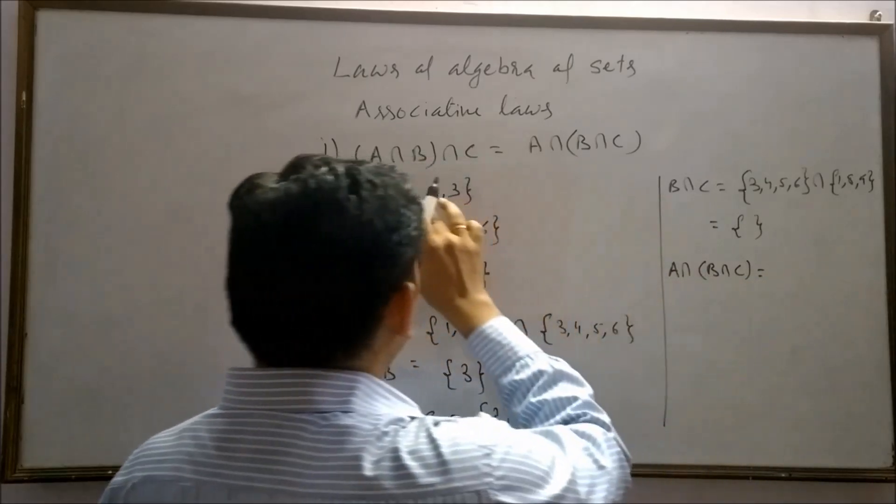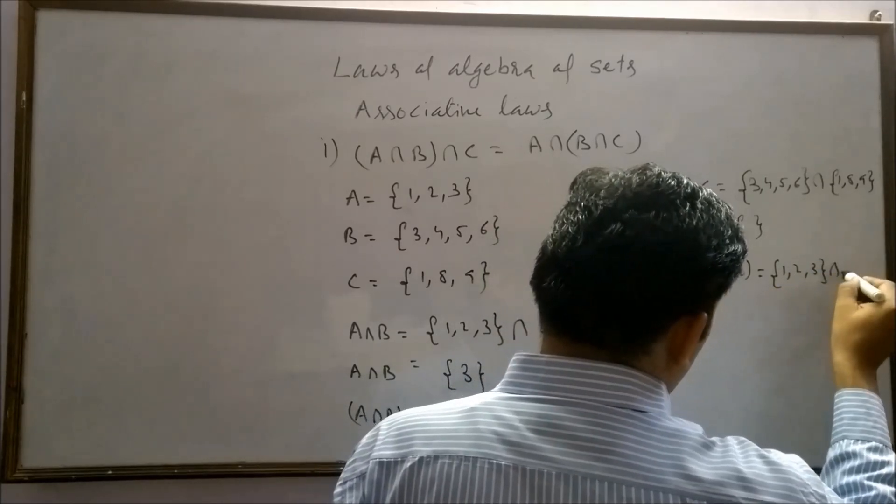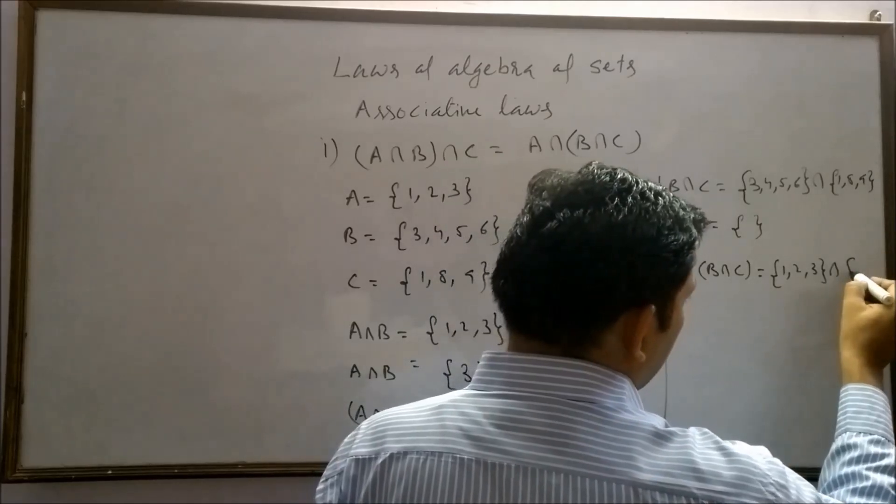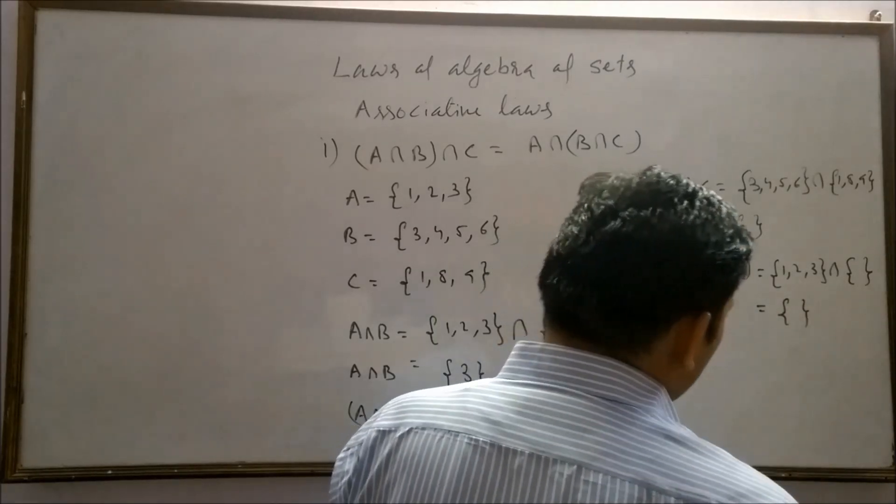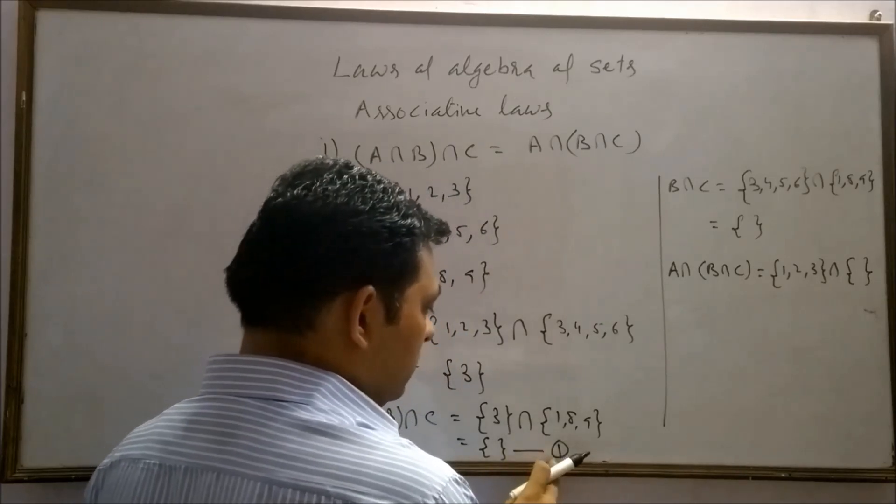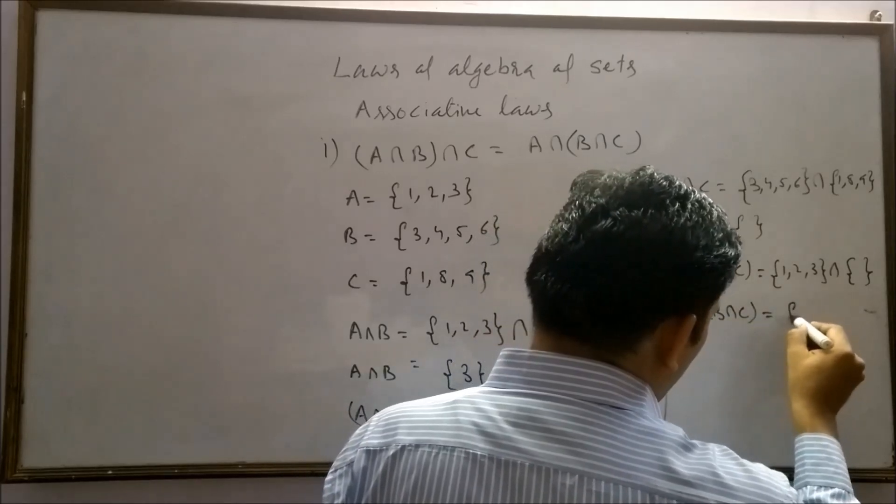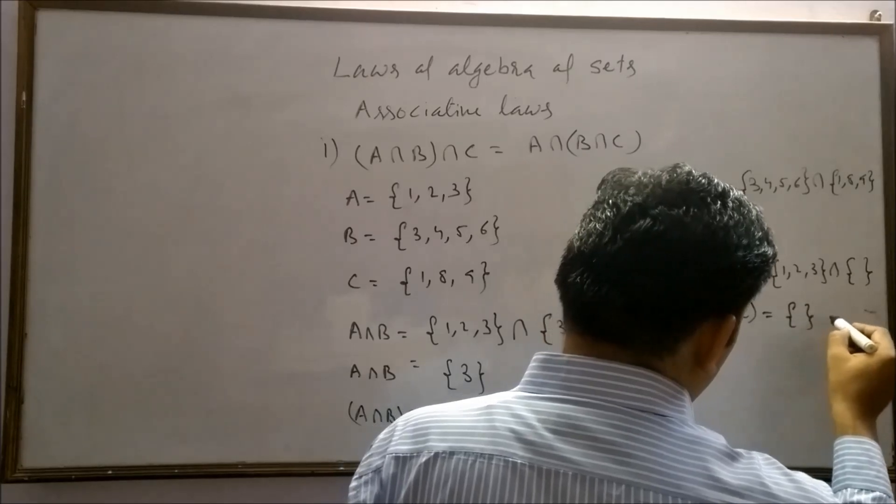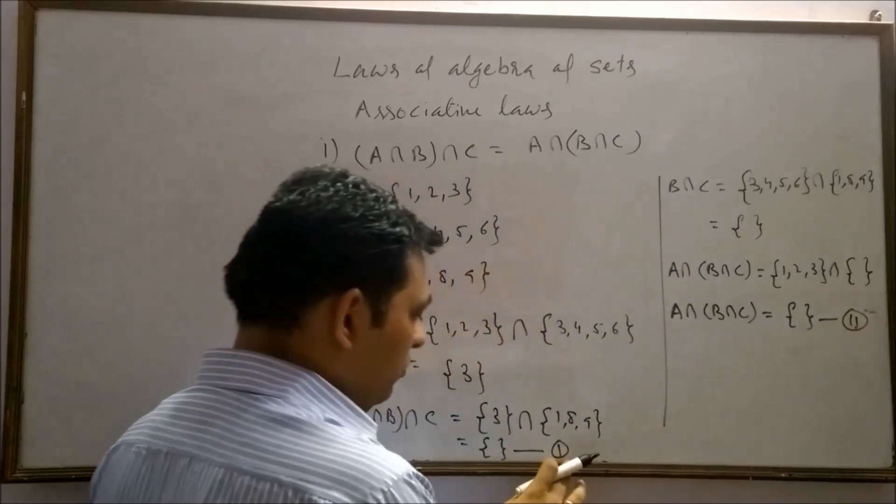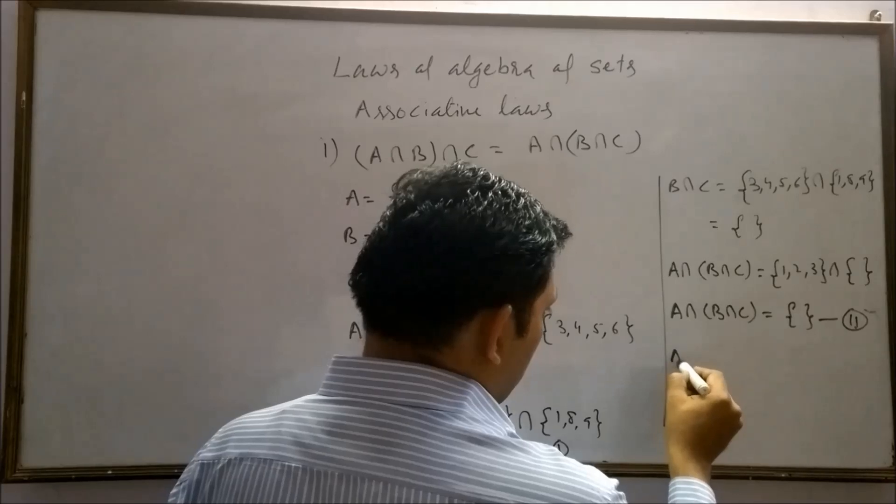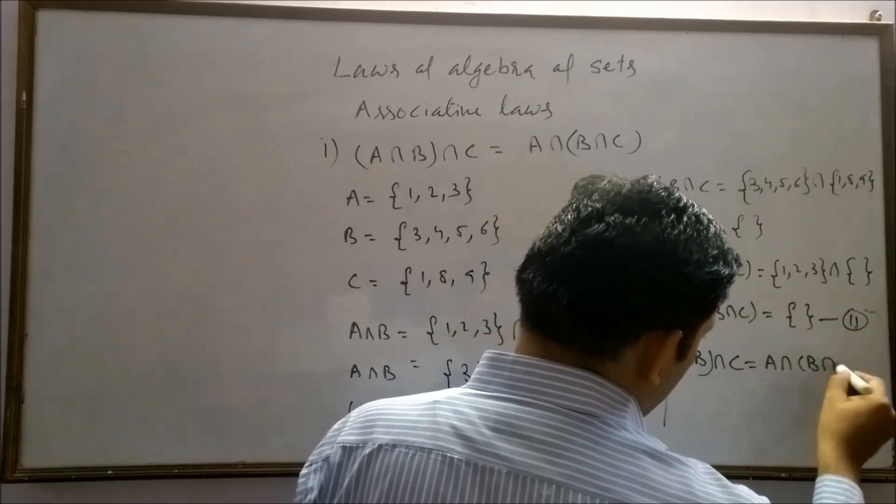Now take intersection B intersection C with A. A means A is first three natural number. Intersection B intersection C is empty set. What is common? There is no element common. So we get empty set. This is result 1 and the result 2 is also empty set. From 1 and 2, we conclude that A intersection B intersection C is equal to A intersection B intersection C.